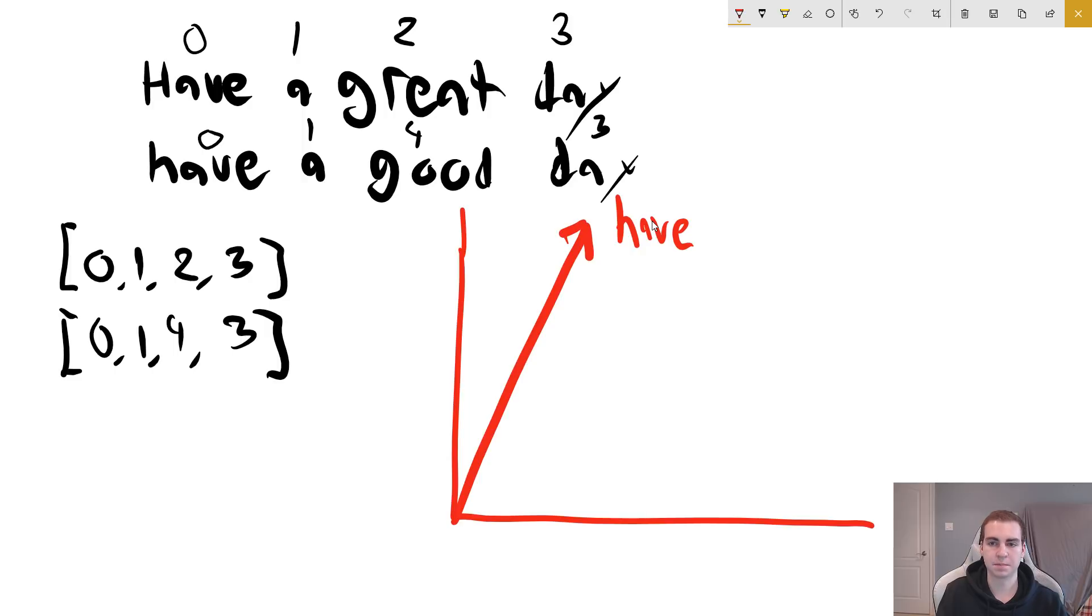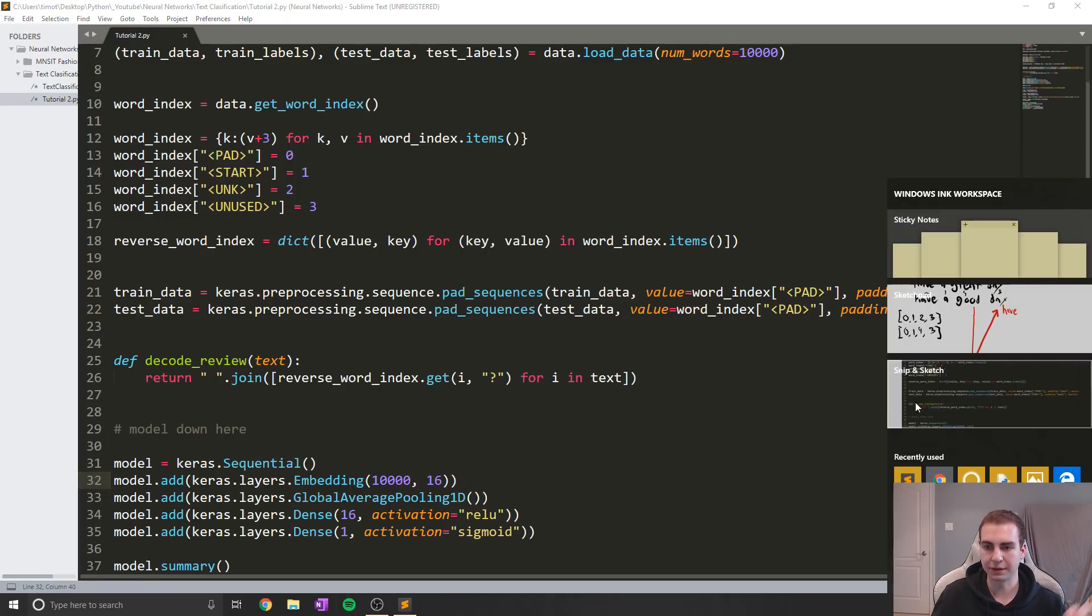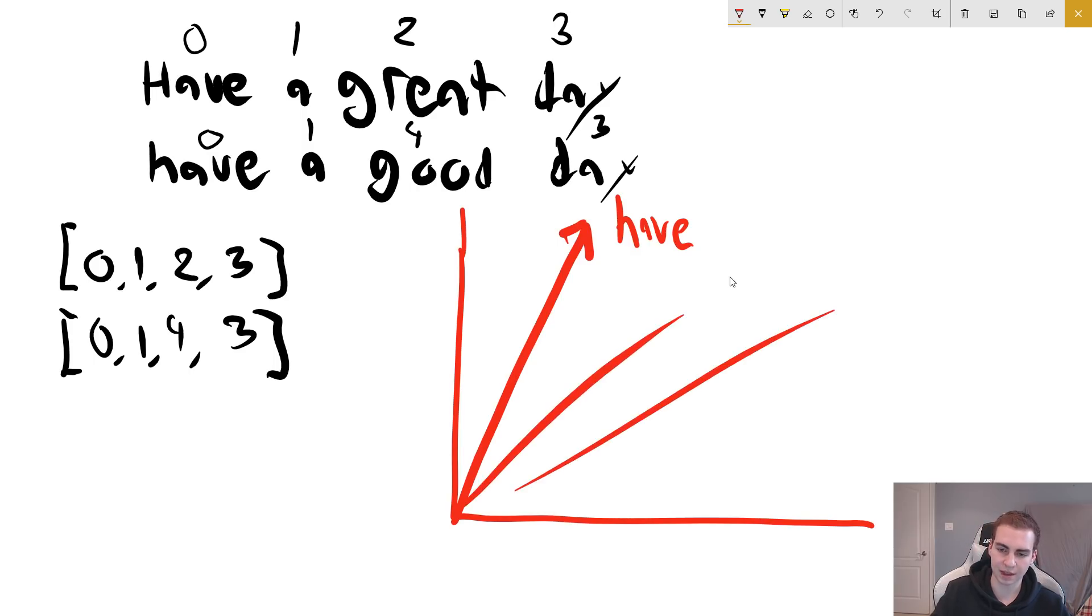In our computer, it wouldn't actually be have, it would be zero because we have integer encoded stuff. But you get the point. So we'll say this is the word vector for have. Now, what we're going to do immediately when we create this embedding layer is we initially create 10,000 word vectors for every single word. In this case, every single number that represents a word. So when we start creating this embedding layer, we're going to draw 10,000 word vectors in just some random way that are just there. And each one represents one word. And what happens when we call the embedding layer is it's going to grab all of those word vectors for whatever input we have and use that as the data that we pass on to the next layer.